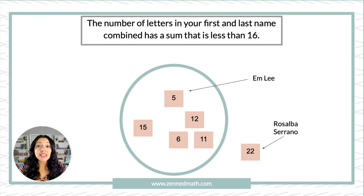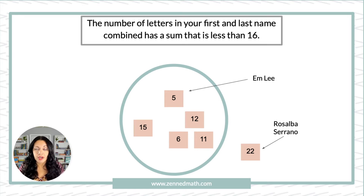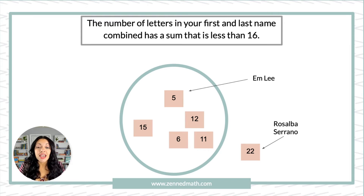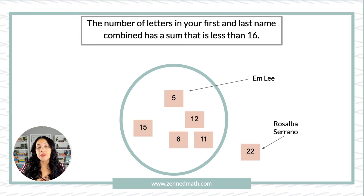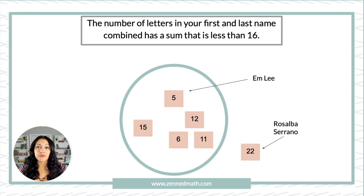Students would take their post-it and place it according to this single loop. If their sum is less than 16, they put it on the inside — you can see those numbers there that are less than 16. If the sums were greater than 16, they go outside the loop — that's the outlier, the piece of data that does not fit with what we're looking for.